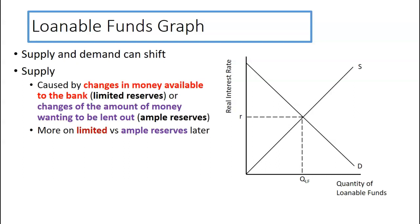So these curves can shift. The supply can shift mostly when there's a change in the money available to the bank. That's going to be more associated with the concept called limited reserves, or when there's changes in the amount of money wanting to be lent out and that's more based on ample reserves. We're going to talk more about that in the banking sector. So if we want to supply a larger amount of money for whatever reason, supply shifts to the right, what does that do? It's going to decrease the interest rates that they're going to loan to the borrowers and there's a larger amount of money available to be loaned out or borrowed.